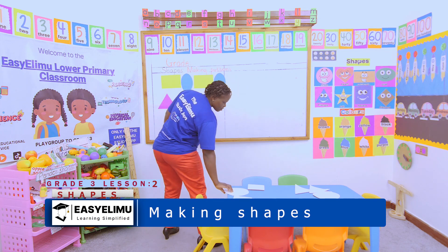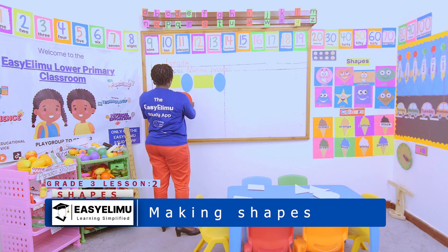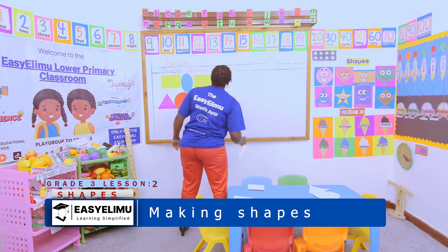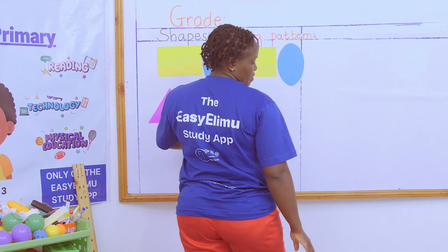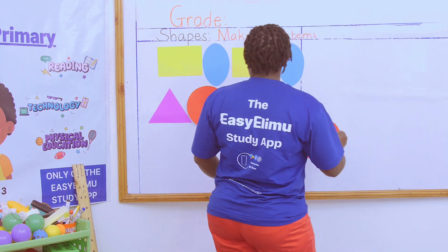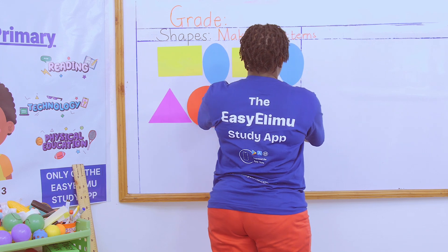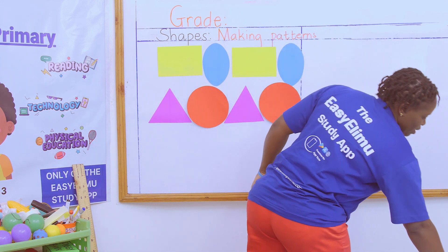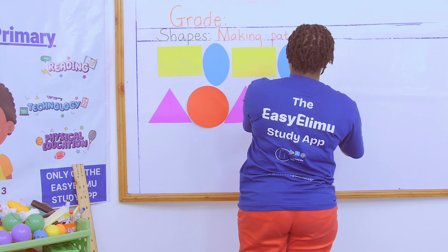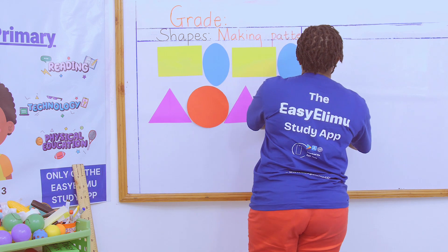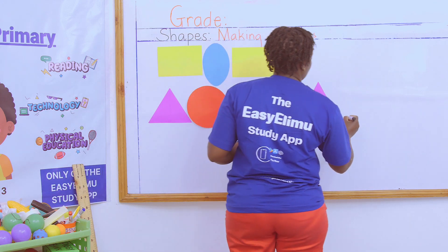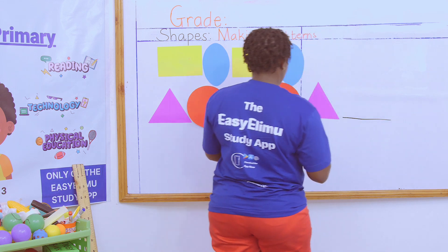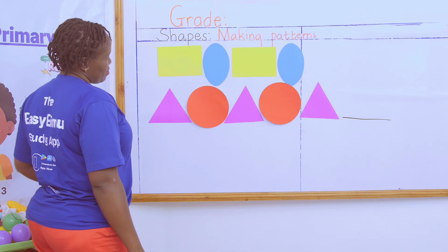I can also decide to make a pattern using the triangle, then the circle, then the triangle again. And now you have the triangle and you have to complete — which one is the missing shape? You have to complete it here and tell me which one is the missing shape to complete that pattern.